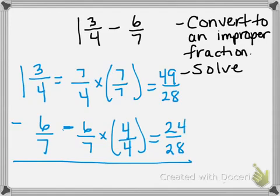As I was saying, you are subtracting. So 49 minus 24 would be 25 over 28. And that cannot be reduced any further. So that's what I get from my answer, 25/28.